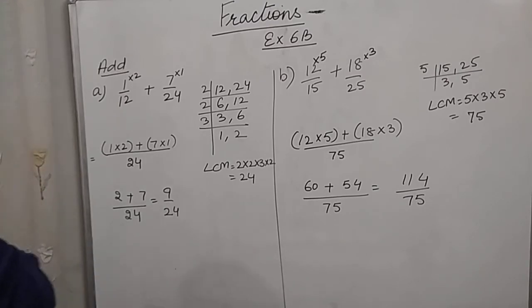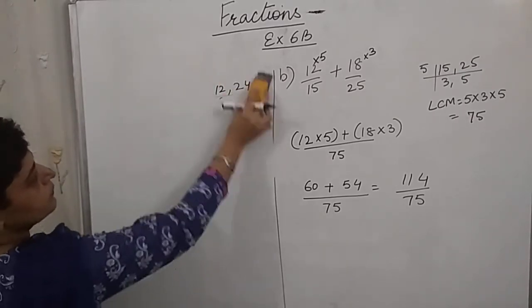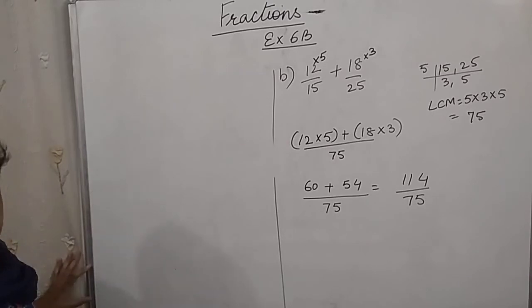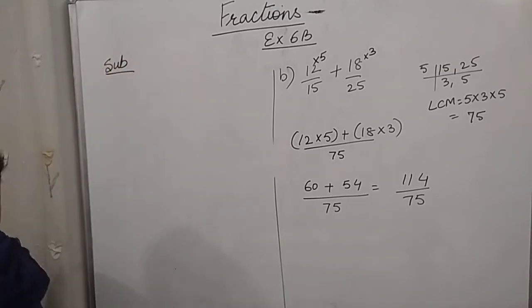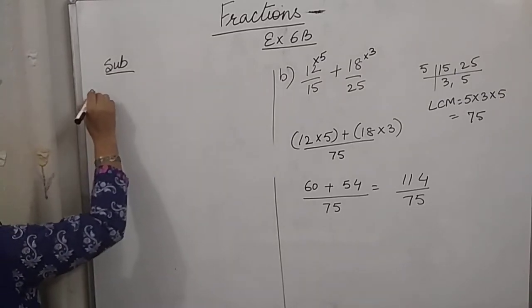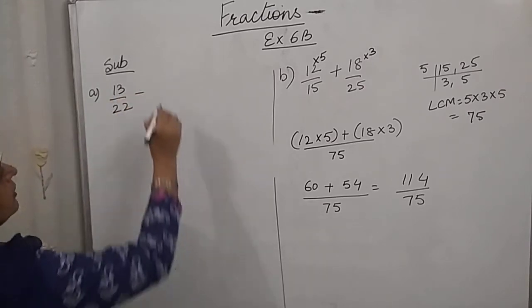Now, let's do the same sum of subtraction using the same method. Let's see if there is any difference. Now, 13 by 22 minus 1 by 2.